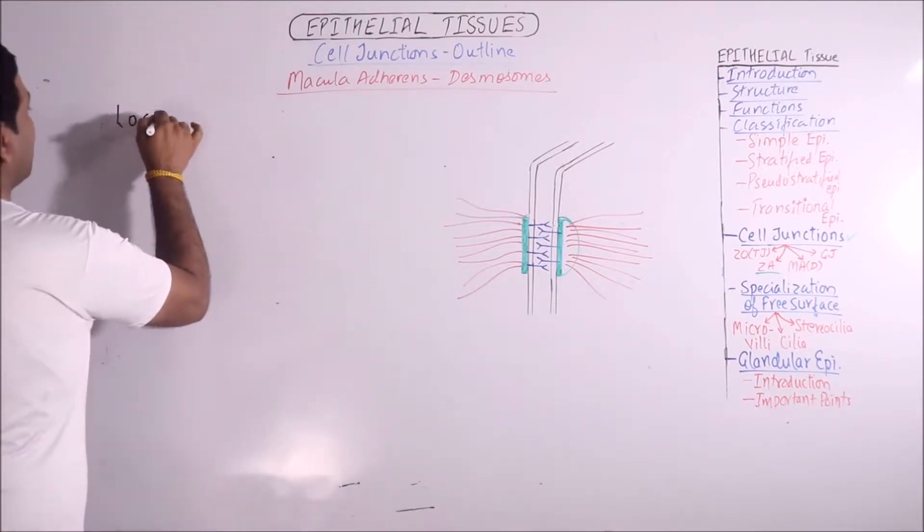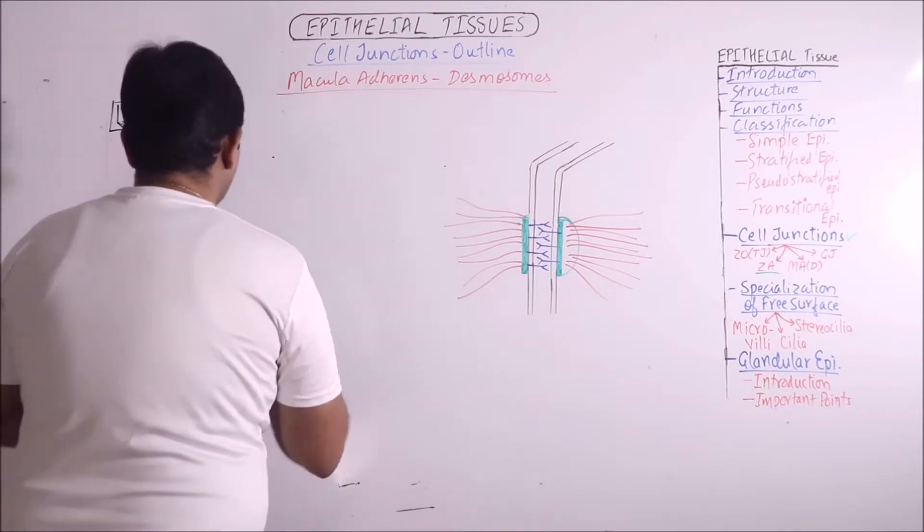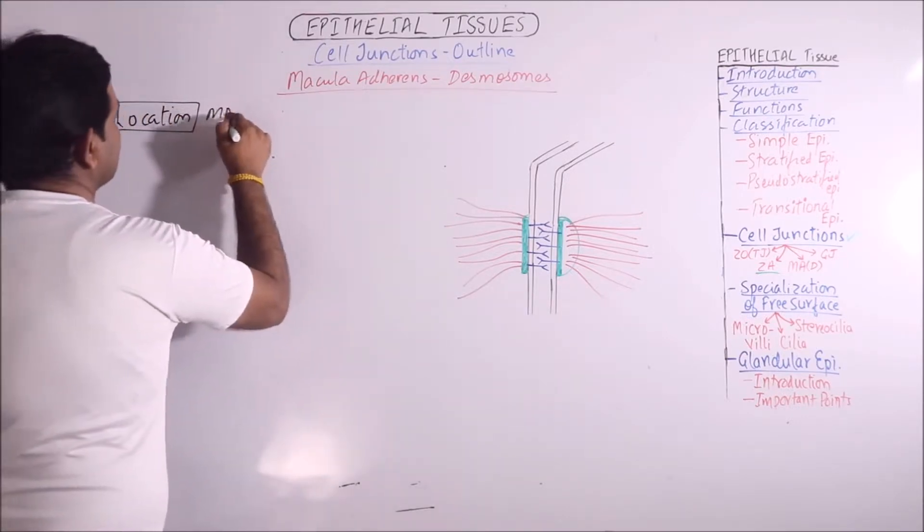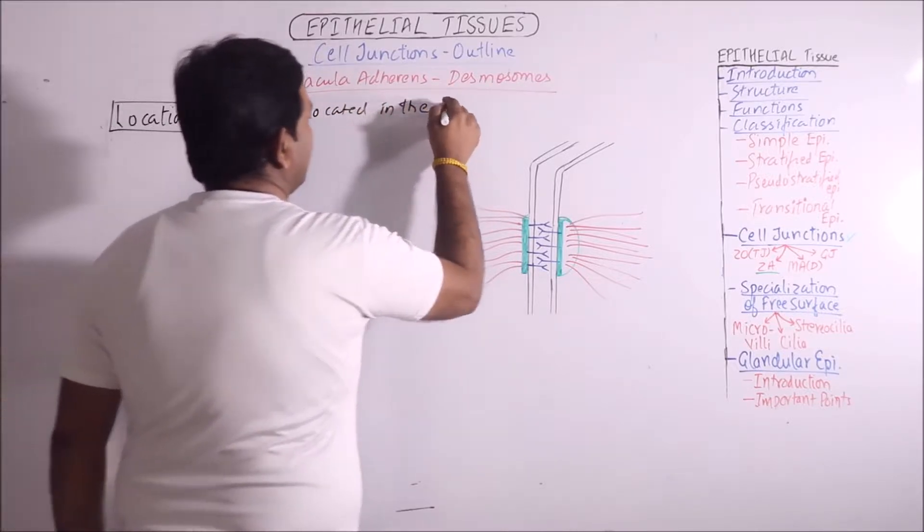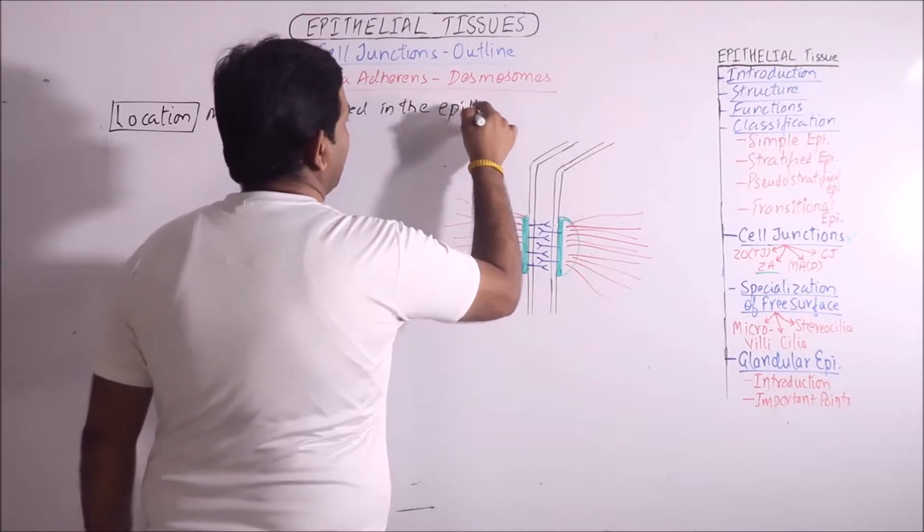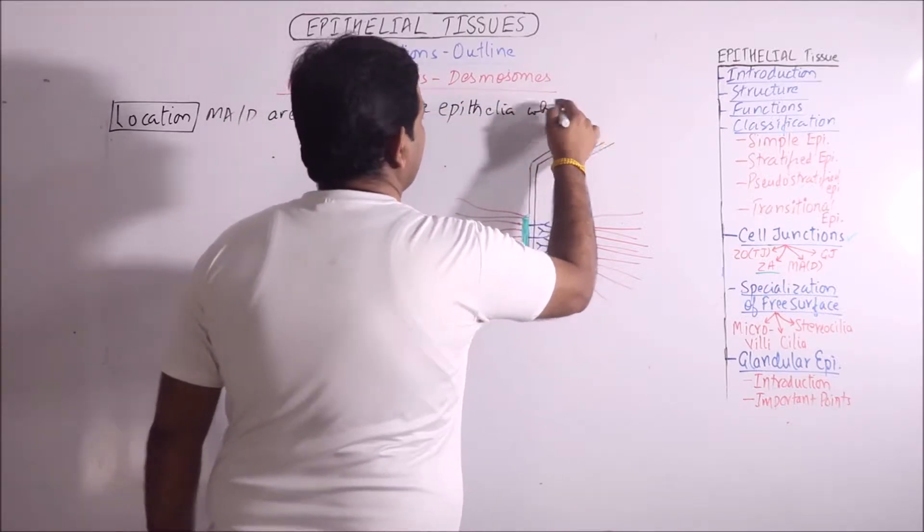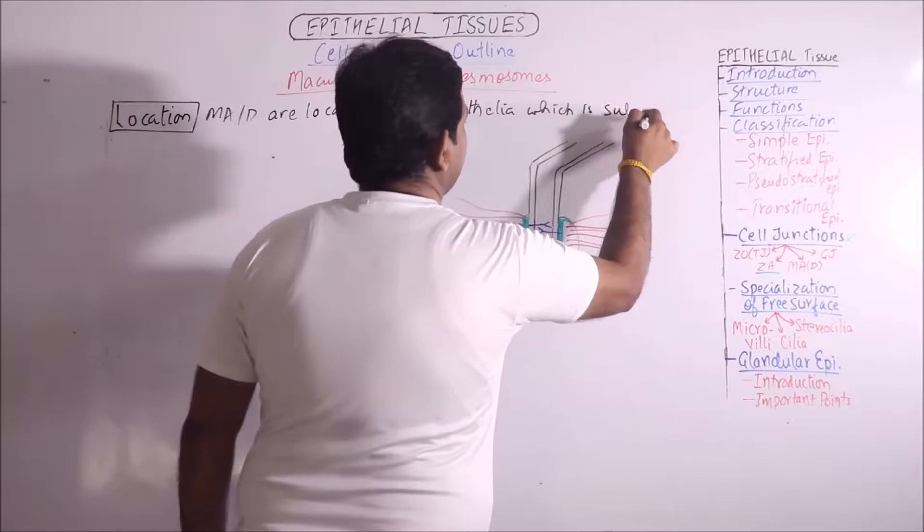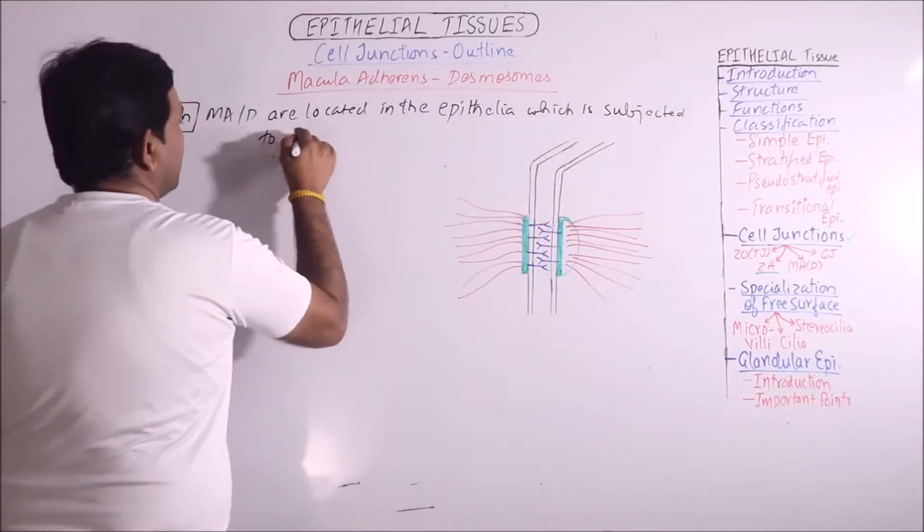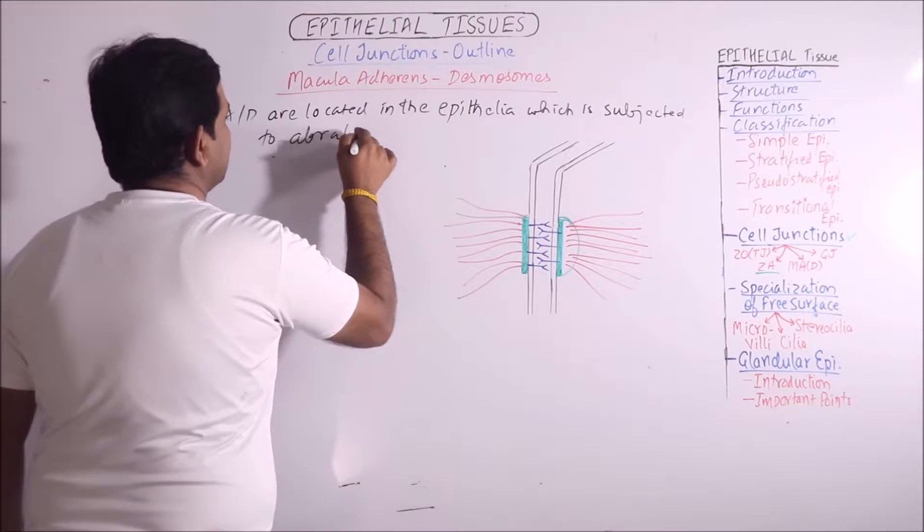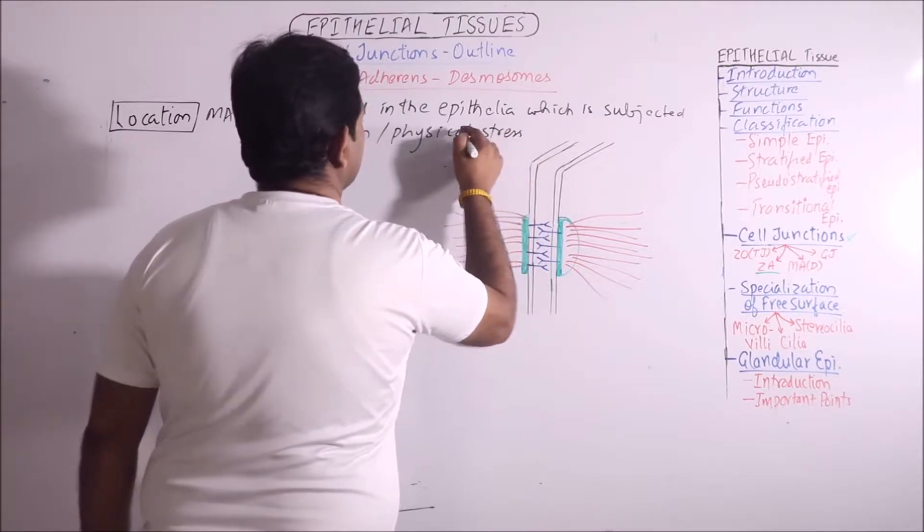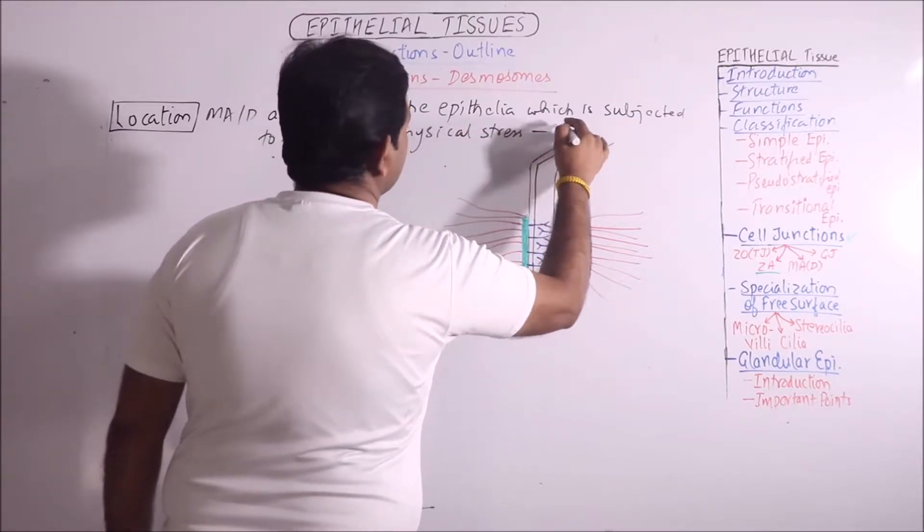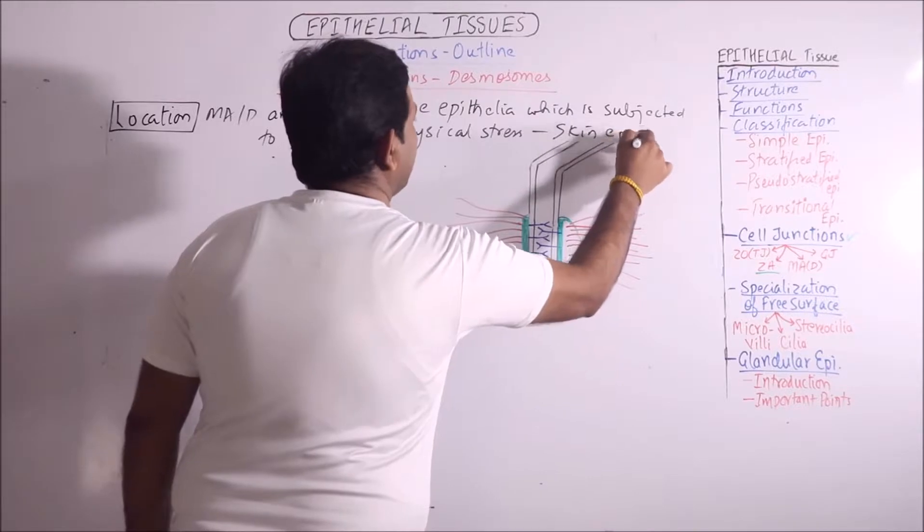First of all, location. Macula adherence or desmosomes are located in the epithelia which is subjected to abrasion or physical stress, just like skin epidermis.